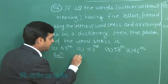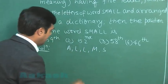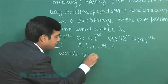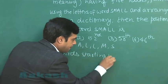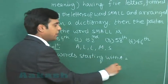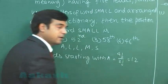First we write the letters as A, L, L, M, S. Now words starting with A, this is simply 4 factorial by 2 factorial, that is 12.